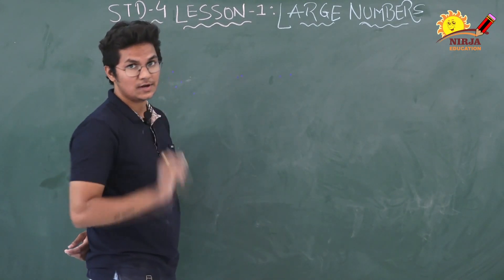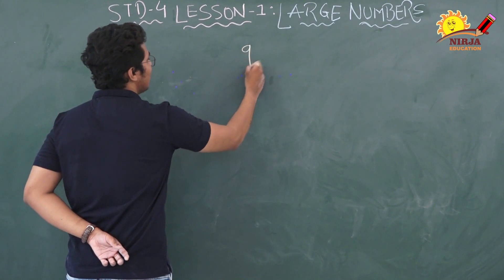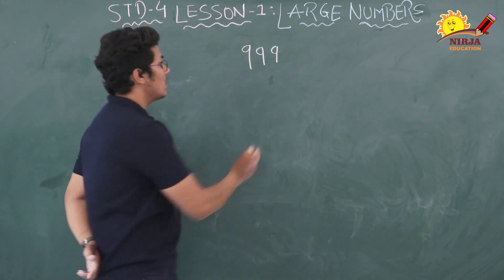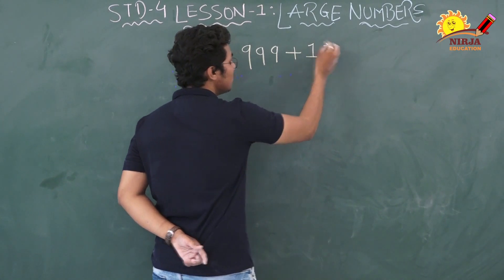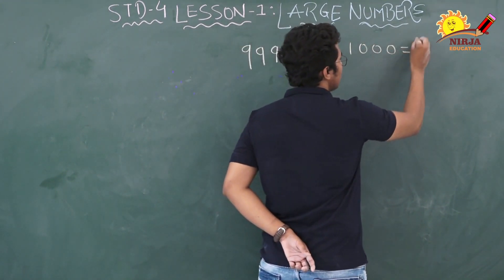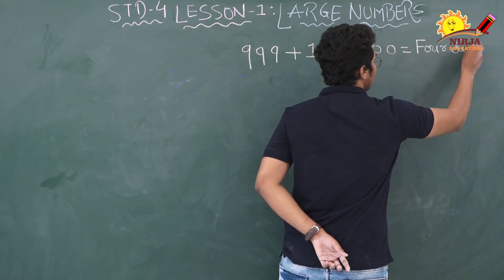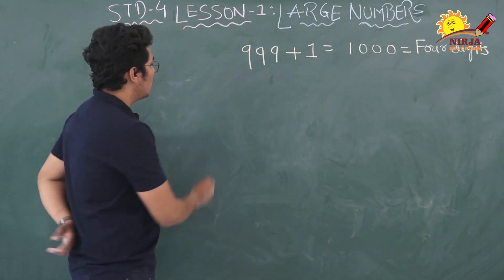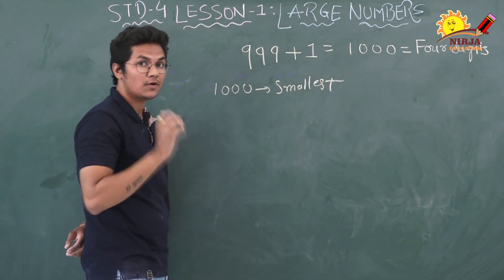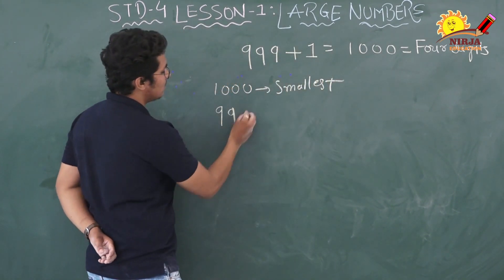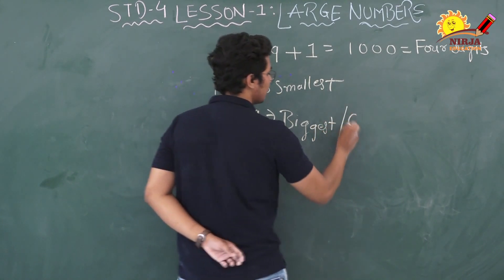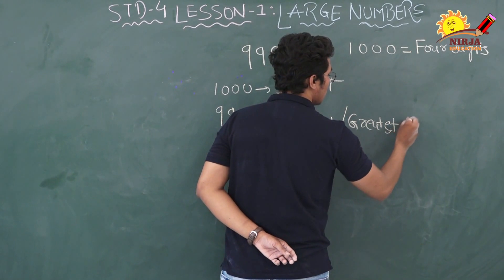You know that the greatest 3-digit number is 999. If we add 1 to this number, what will we get? We get 1000, which is a 4-digit number. We know that 1000 is the smallest 4-digit number. So which number is the biggest 4-digit number? 9999 is the biggest or greatest 4-digit number.